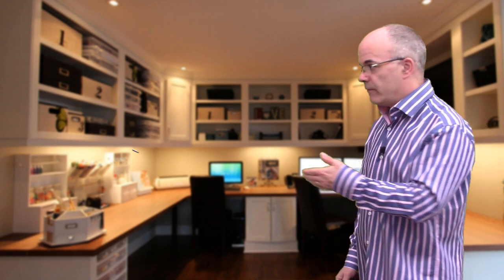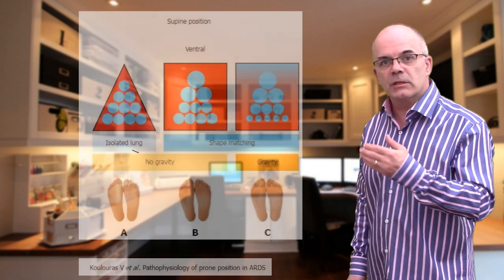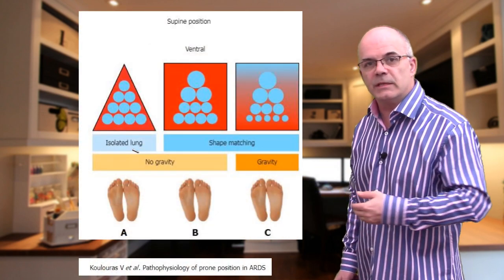In the ARDS patient, the gravitational forces, the increased pressure from the wet lung, and the shape matching issue all combine to act in the same direction, having a detrimental effect on the dependent alveoli. However, as you can see in the diagram, the prone patient suffers less from these effects.